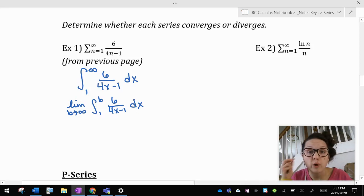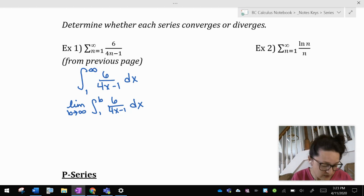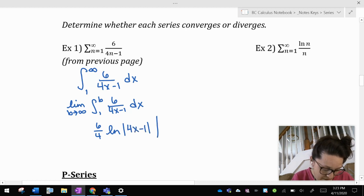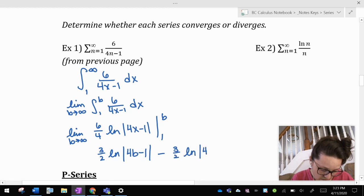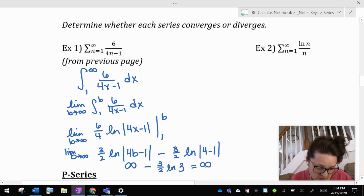The antiderivative of 6 over 4x minus 1 is going to be one of those ln's. So it's going to be 6 fourths ln absolute value of 4x minus 1 from 1 to b as b approaches infinity. And so that's going to be 3 halves ln 4b minus 1 minus 3 halves ln 4 minus 1 as b approaches infinity. So as b approaches infinity here, this is going to be 3 halves times the ln of infinity, that's infinity, minus 3 halves ln 3, which is just a number. So this is infinity.